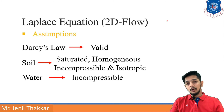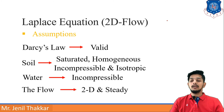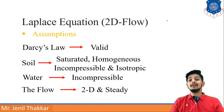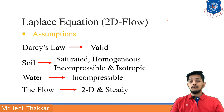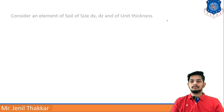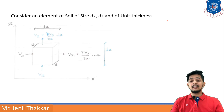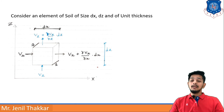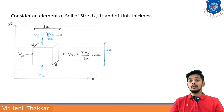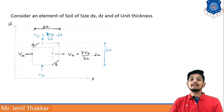Water is also assumed as incompressible. The flow should be two-dimensional and steady. Steady flow means with minimal disturbance. Now consider an element of soil of size dx, dz, and of unit thickness. In this image, you can see the x and z-axes; the y-axis is assumed as one unit, so it is treated as a 2D element.